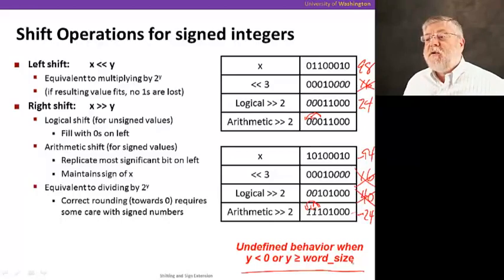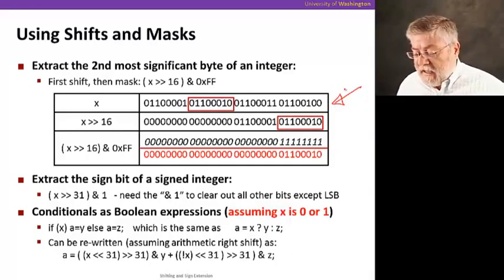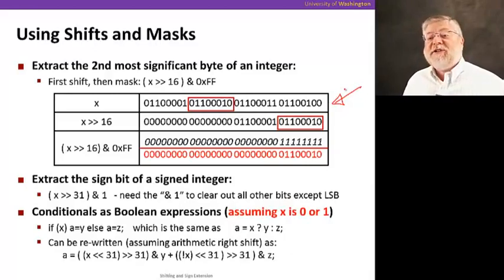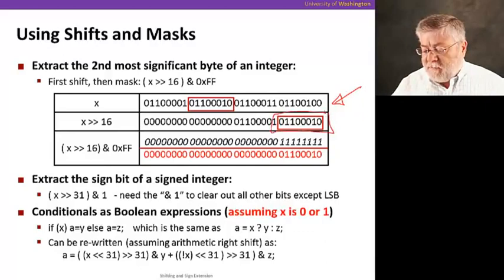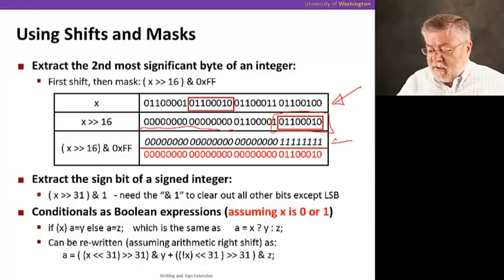Let's see how these shift operations can be used for more interesting things, though, than just doing basic multiplication and division by a power of two. Here, I'm showing how we can extract the second most significant byte of an integer using shift and masking. The example we're going to start with is this 32-bit pattern. And we want the second most significant byte. That's the one with the red box around it. And we can get that to all the way over to the right by shifting that value by 16 to the right. So now we've moved that byte over to the low order eight bits, and you'll notice we've padded with zeros on the far left end.